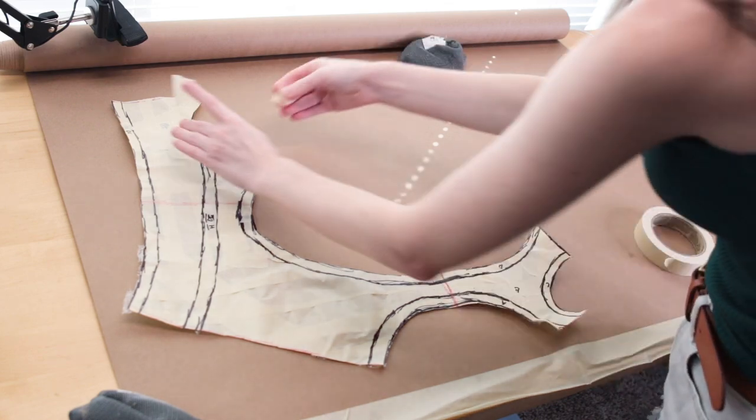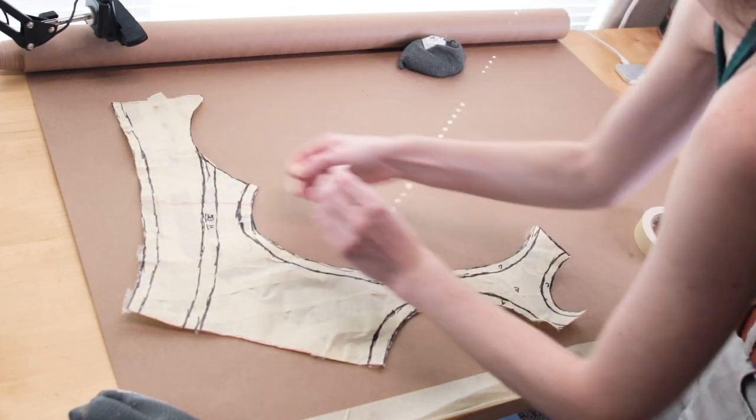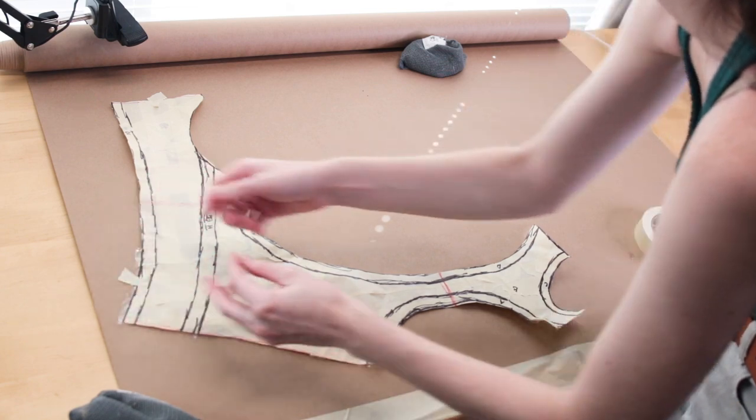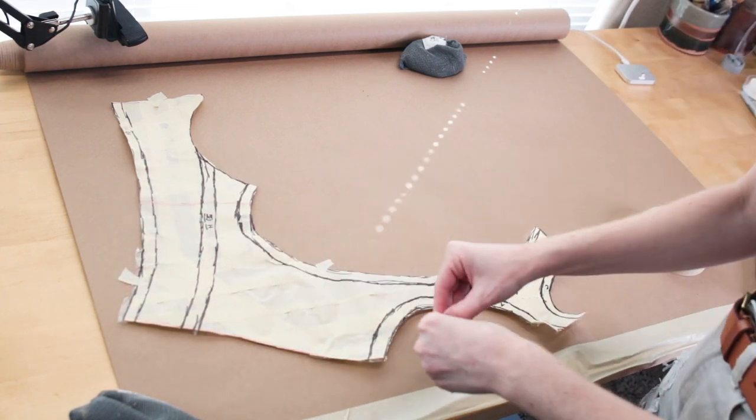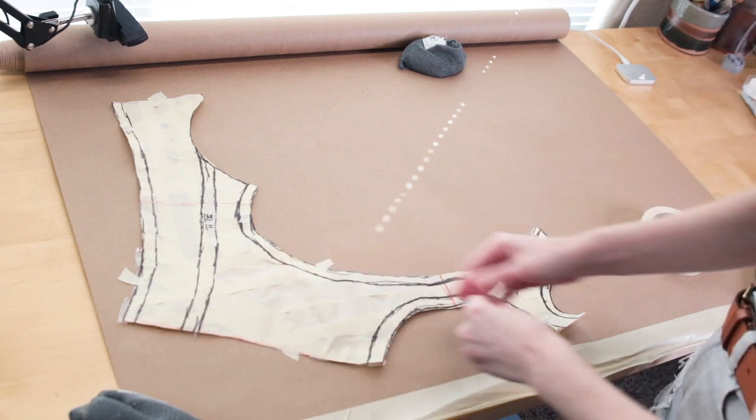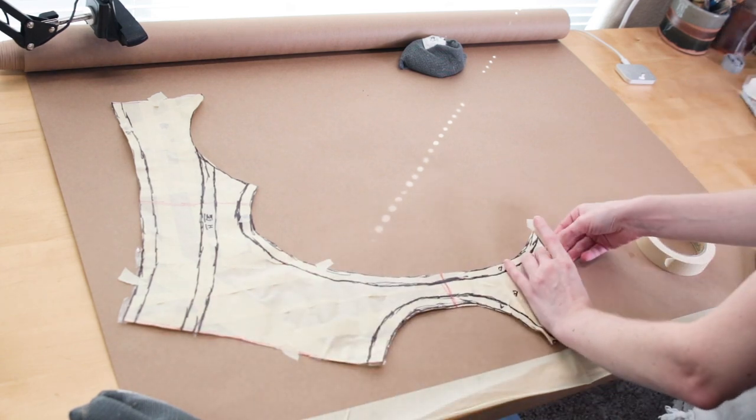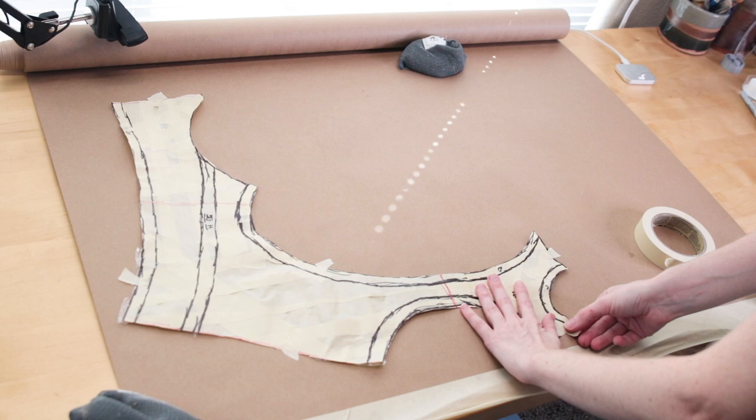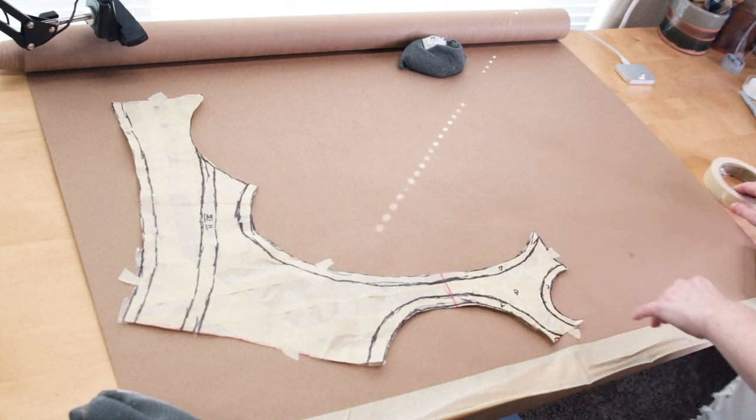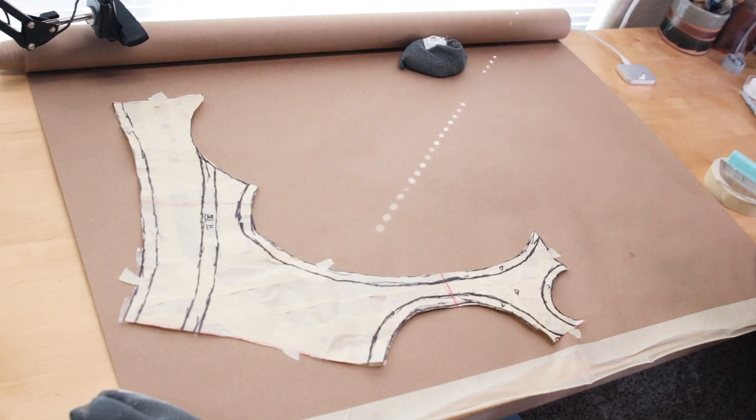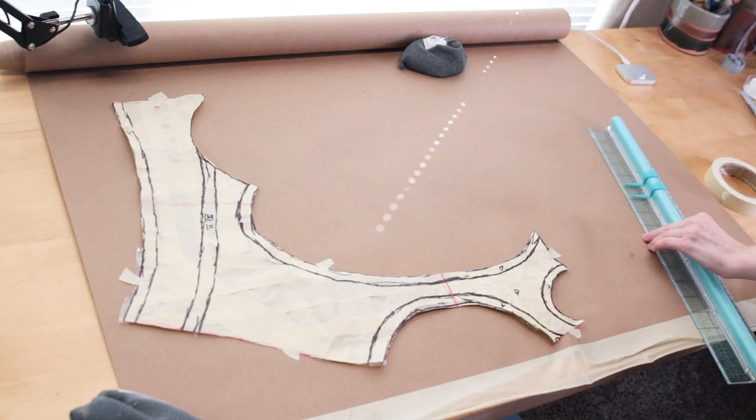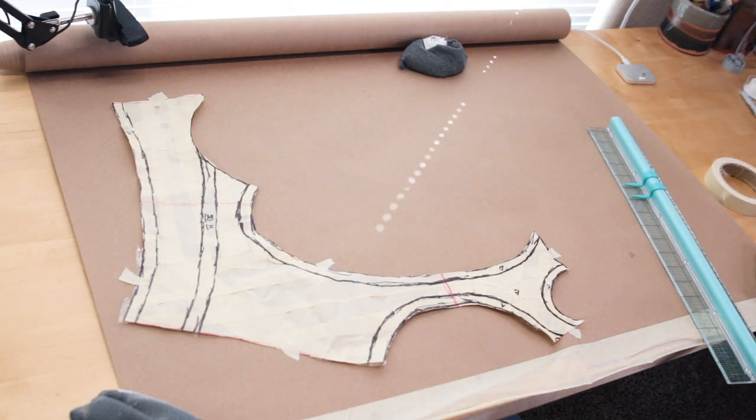If you notice, there's a lot of extra lines on this piece, and these are intended to be detail pieces of EVA foam that will be attached on top of this one piece. It's better to have one solid piece and to apply things on top of it rather than have a bunch of different puzzle pieces and try to put it together, because your structural integrity will not be as good.